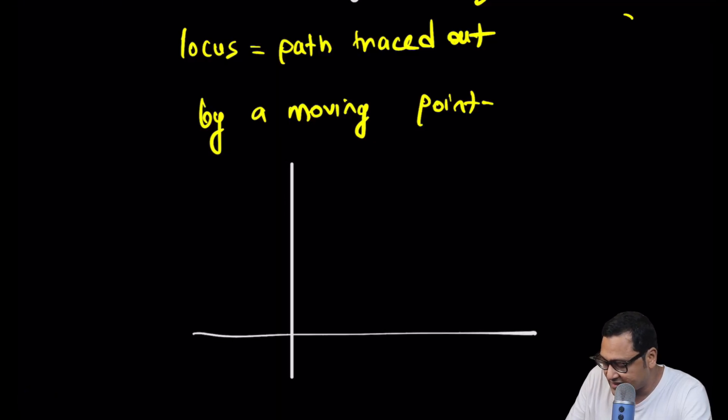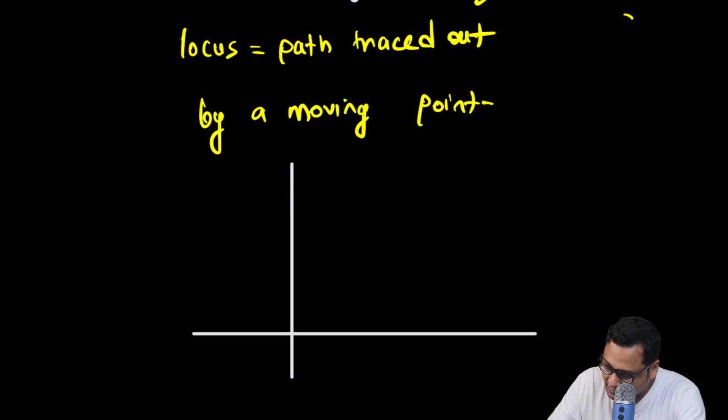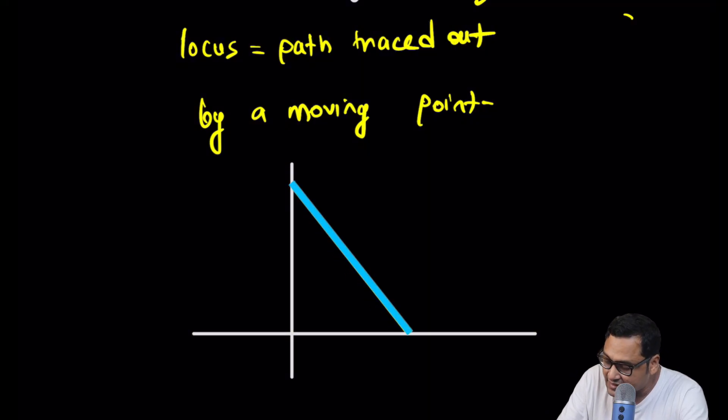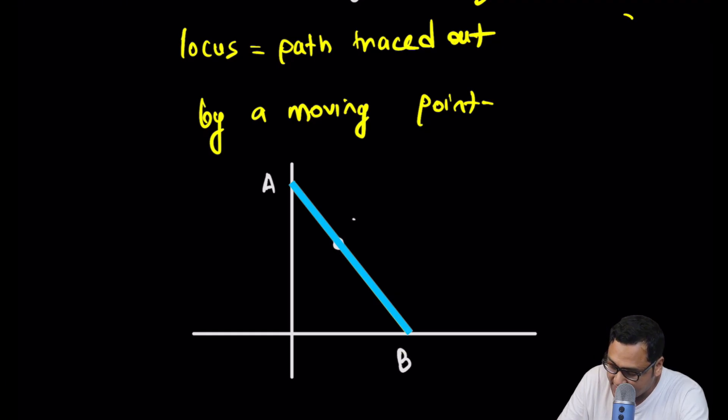Let's draw the picture one more time. We have the wall, the ground, and the ladder. This is point A, this is point B, and this point is P. Let's say the coordinate of point P is (h, k). We have to find an equation satisfied by point P — an equation in x and y. If we plug in the x and y coordinates of P, that equation will be satisfied.